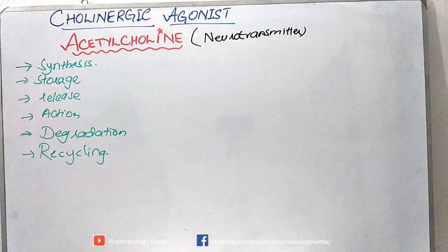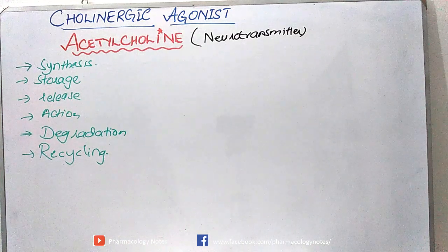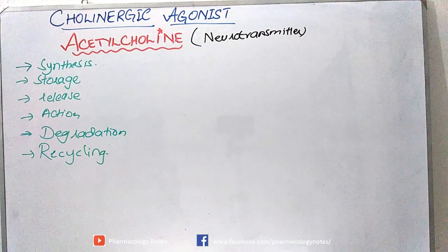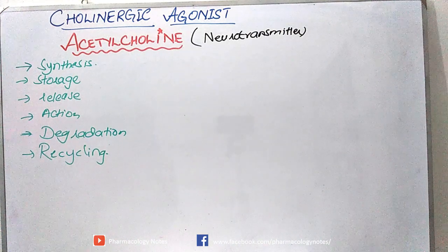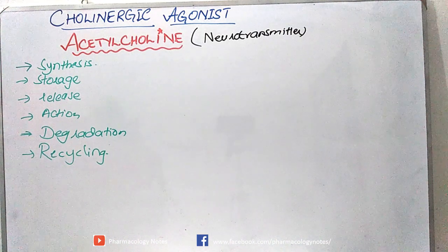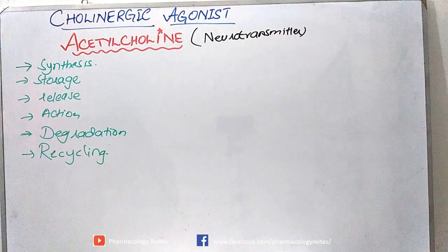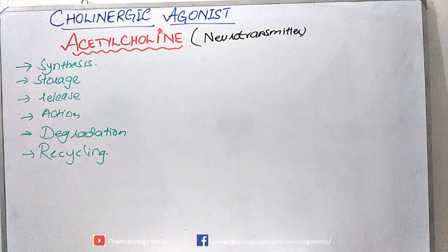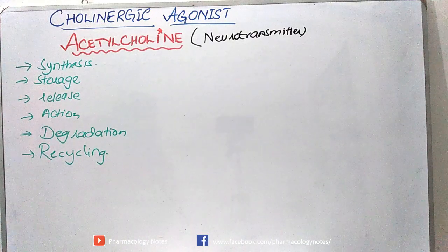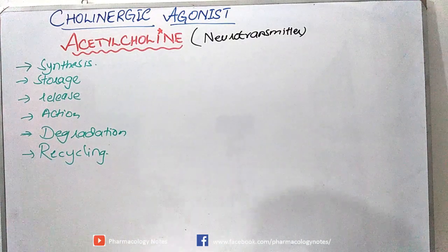As we have discussed for norepinephrine, which is a naturally occurring neurotransmitter in our body, acetylcholine is similarly a naturally occurring neurotransmitter, but this one is cholinergic. Let's have a look at how it is produced.